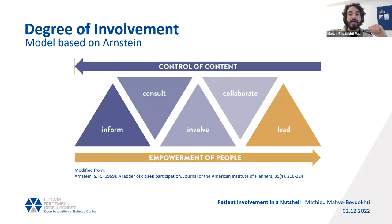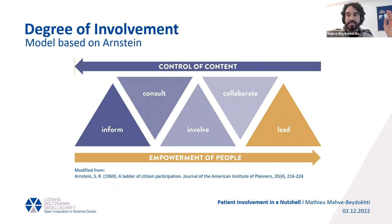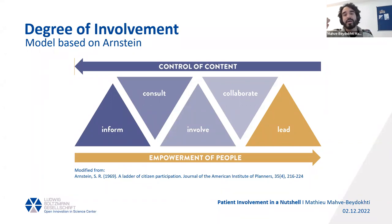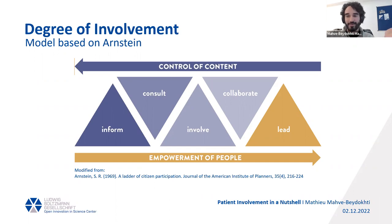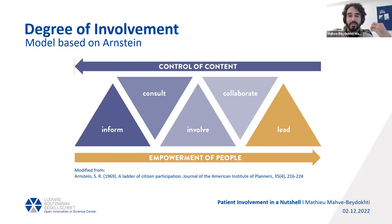I also want to give a brief theoretical overview of different degrees of involvement, which can be very useful when planning an involvement activity. There is something called Arnstein's Ladder, which we adapted for our center. Basically, it goes from left to right: 'inform,' which is not really involvement at all — it's about disseminating knowledge to patients without them having a say — going over to 'consult,' where you as a researcher want feedback that you might integrate into the design.